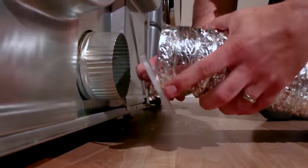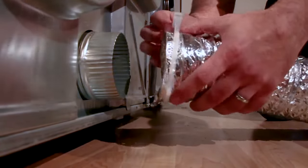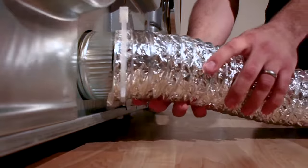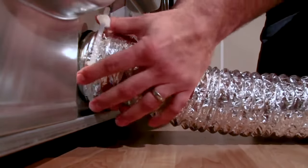Slide one end of the duct over the exhaust outlet of the clothes dryer. Secure the duct and dryer port with one of the nylon clamps provided with your kit.